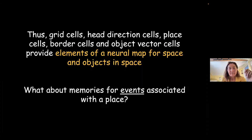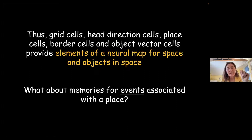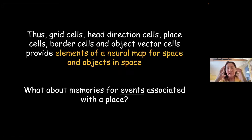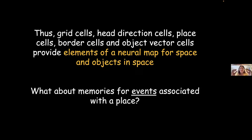So what have we learned? We have seen that grid cells, head direction cells, place cells, border cells, and object vector cells provide elements of a neural map for space and objects in space. We can then ask about a real cognitive map or episodic memory — the daily type of memory — where we associate events with a specific place. Can we study that in the lab?